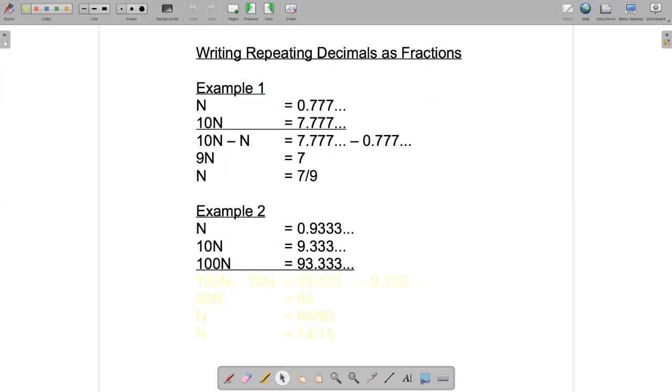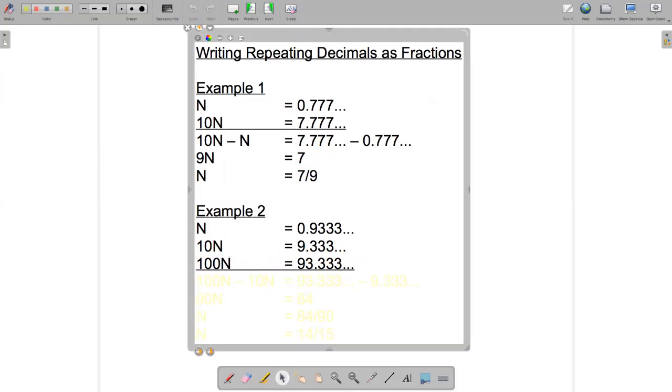Okay now you should be able to see that if I subtract this 9.333 repeating from 93.333 repeating I will get a whole number. So I'm subtracting 100n minus 10n to do that. So let's check what we get. We get 100n minus 10n on this side and on the right hand side we get 93.33 repeating